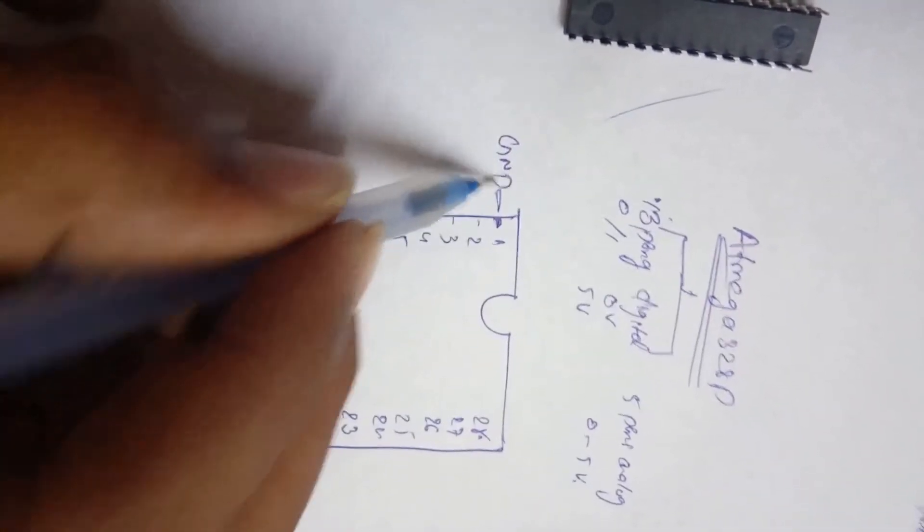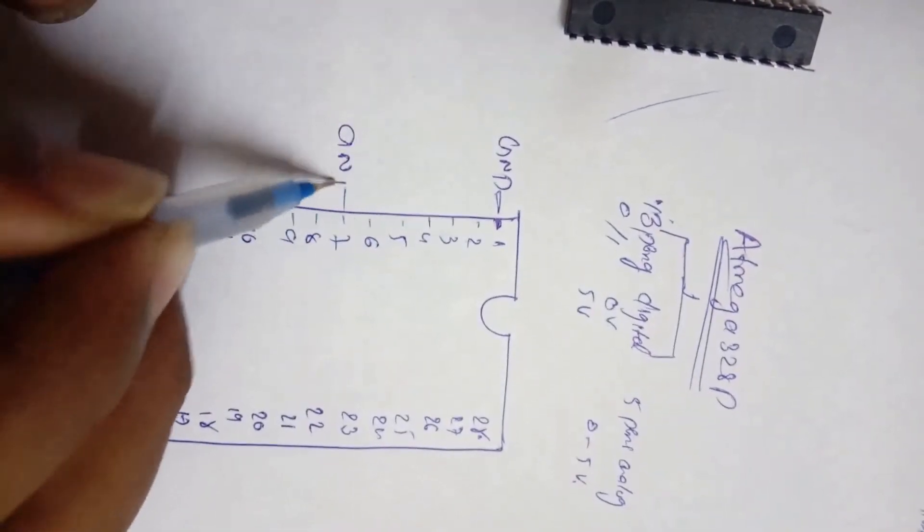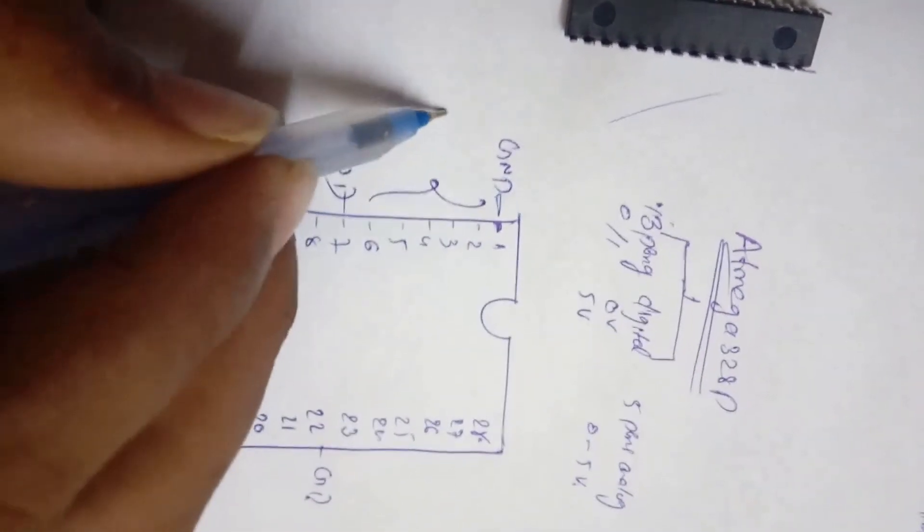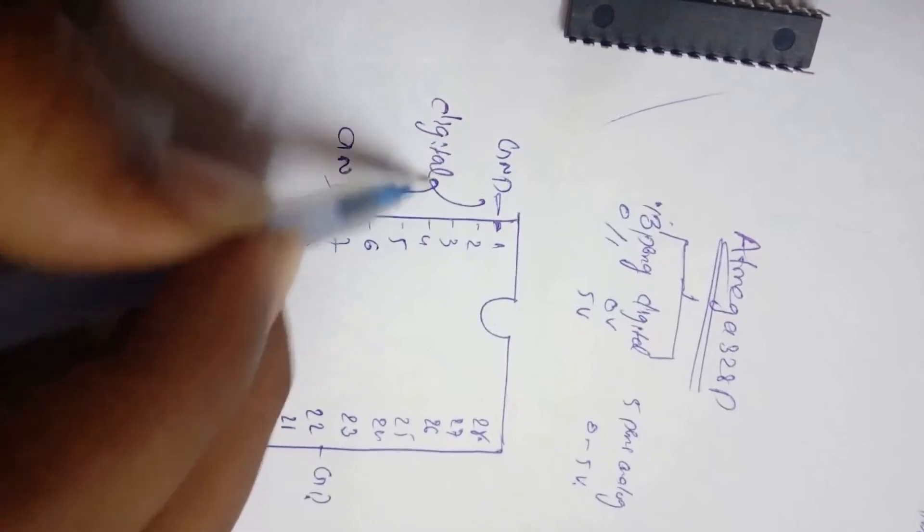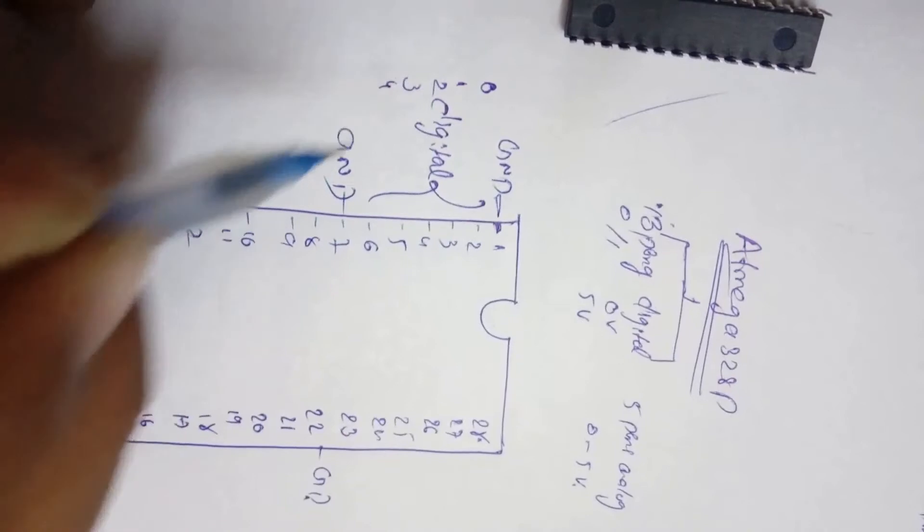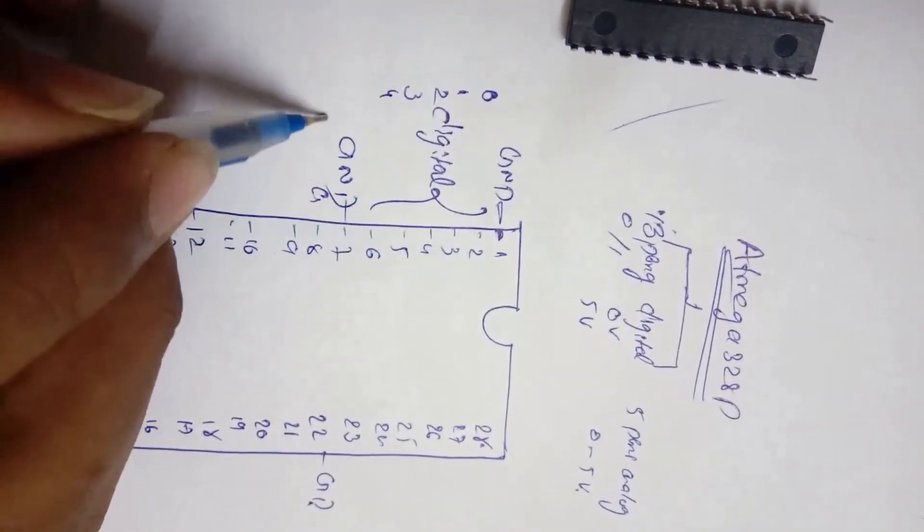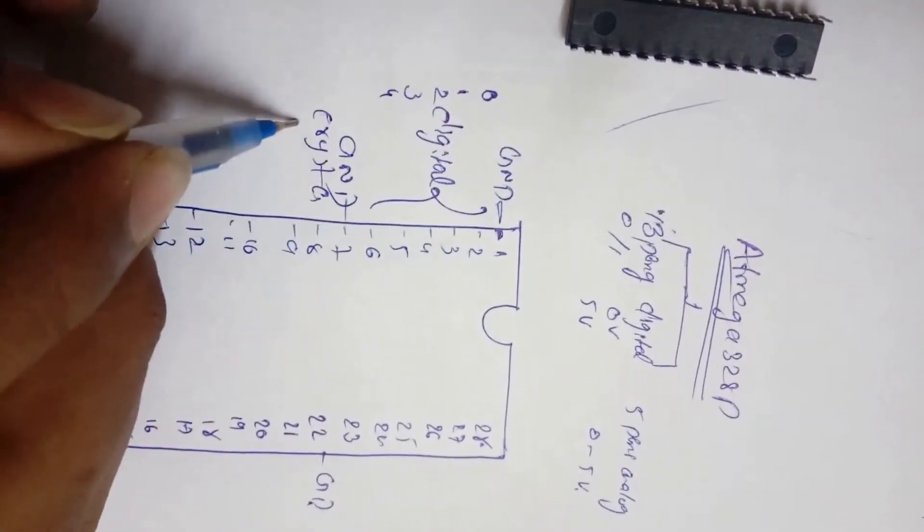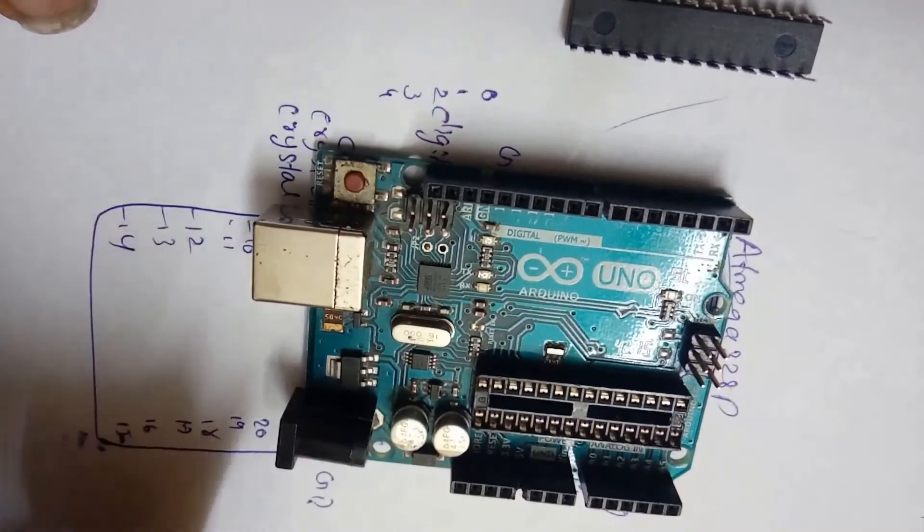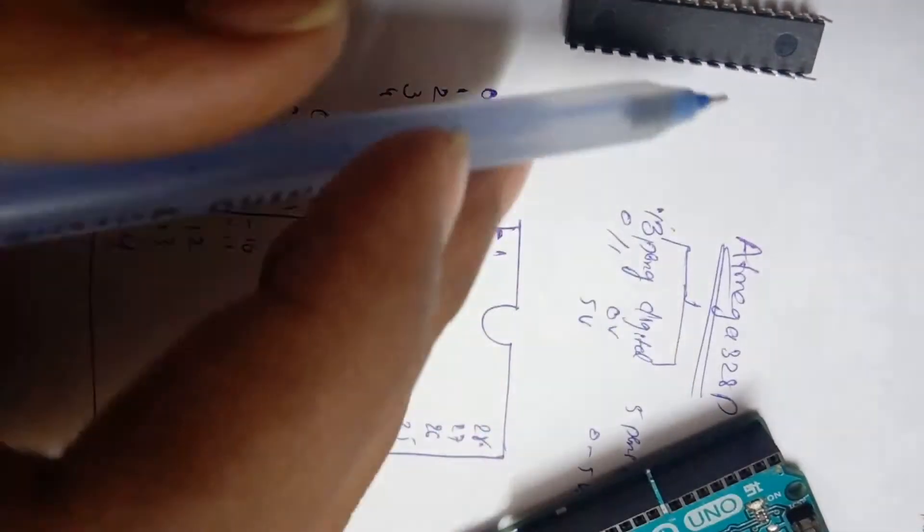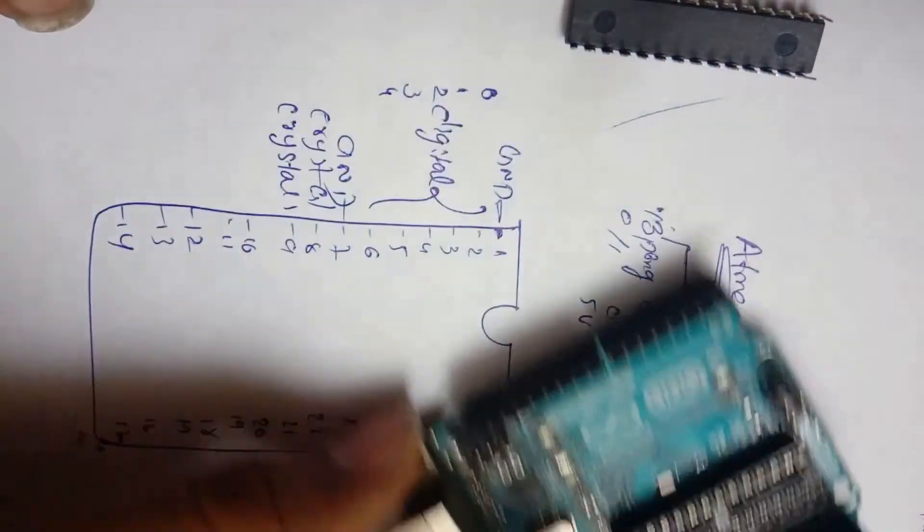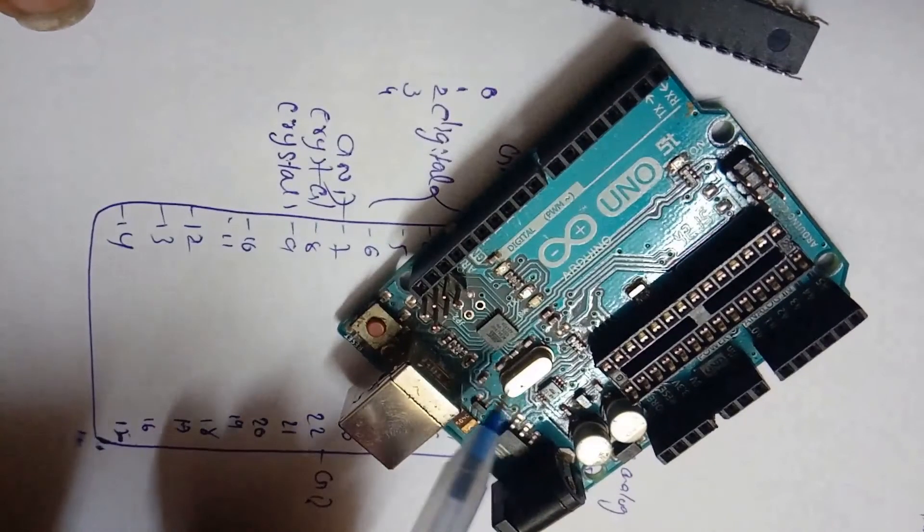This pin is ground. 7th pin is ground. 22nd pin is ground. These are all digital pins. Digital pin 0, 1, 2, 3, 4. This is crystal pin. These two, pin 8 and pin 9 are crystal pins. This is the crystal in which microcontroller is communicated to laptop. The frequency is set by crystal. This is 16 kHz clock crystal.